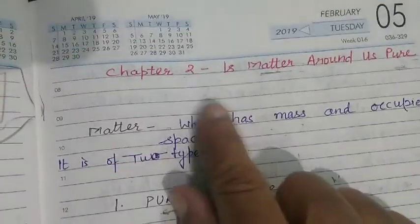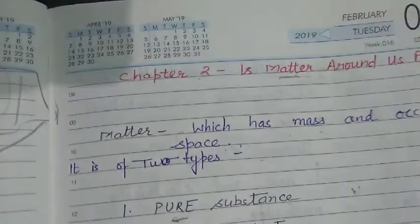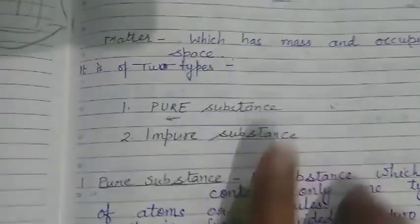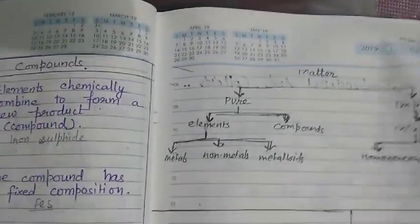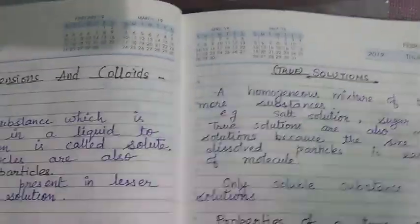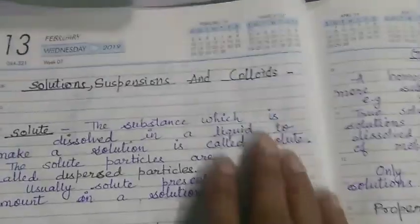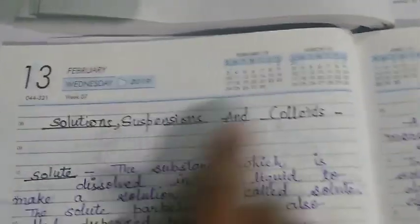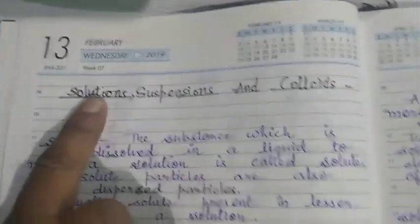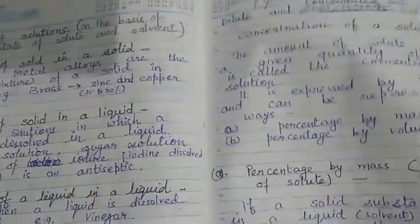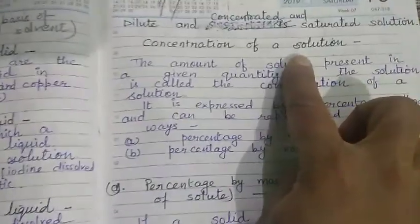Hello class. Tonight we were studying the second chapter of your chemistry book, 'Is Matter Around Us Pure?', in which you studied about pure substances, impure substances, mixtures — what are homogeneous and heterogeneous mixtures, what are compounds, etc. Now we were studying solutions, suspensions, and colloids. I started first with solutions, which we call true solutions.